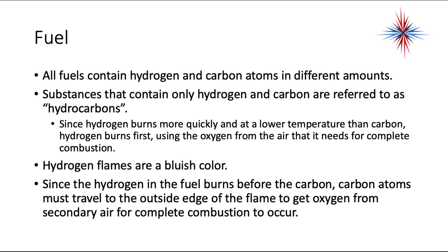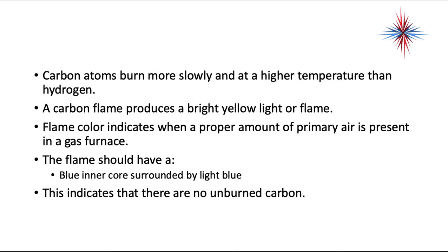All fuels contain hydrogen and carbon atoms in different amounts. Substances that contain only hydrogen and carbon are referred to as hydrocarbons. Since hydrogen burns more quickly at a lower temperature than carbon, hydrogen burns first using the oxygen needed for complete combustion. Hydrogen flames are a bluish color. Since hydrogen burns before carbon, carbon atoms must travel to the outermost edges of the flame to get oxygen from secondary air. Carbon atoms burn more slowly at a higher temperature and produce bright yellow light. Flame color indicates when proper amounts of primary air are present — a perfect flame should have a blue inner core surrounded by lighter blue, indicating no unburned carbon atoms.